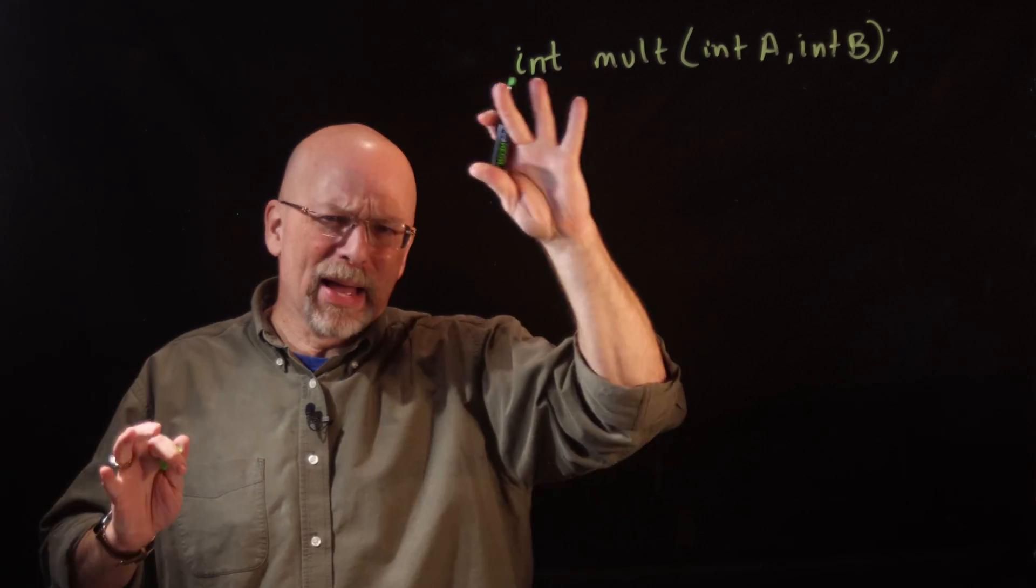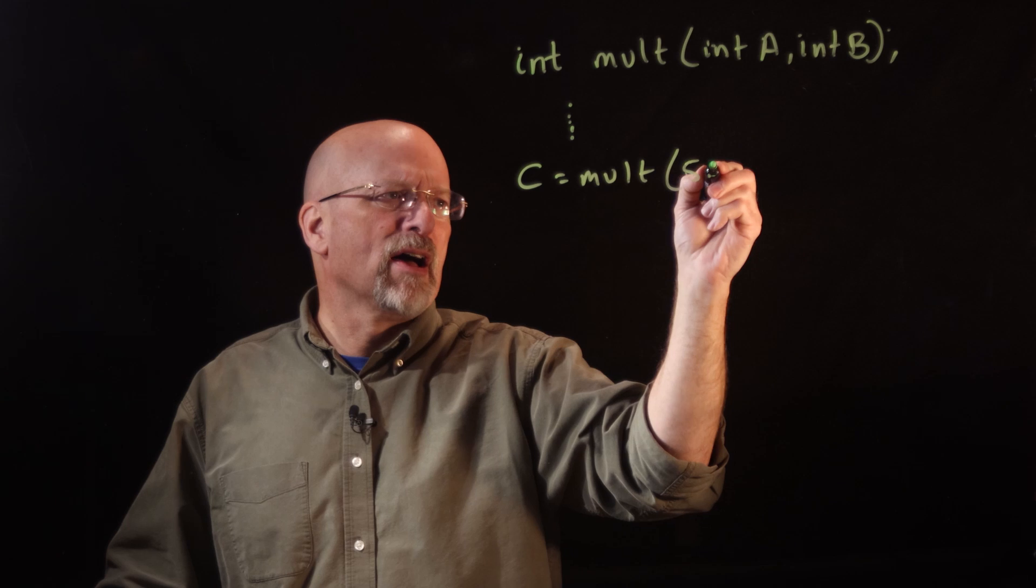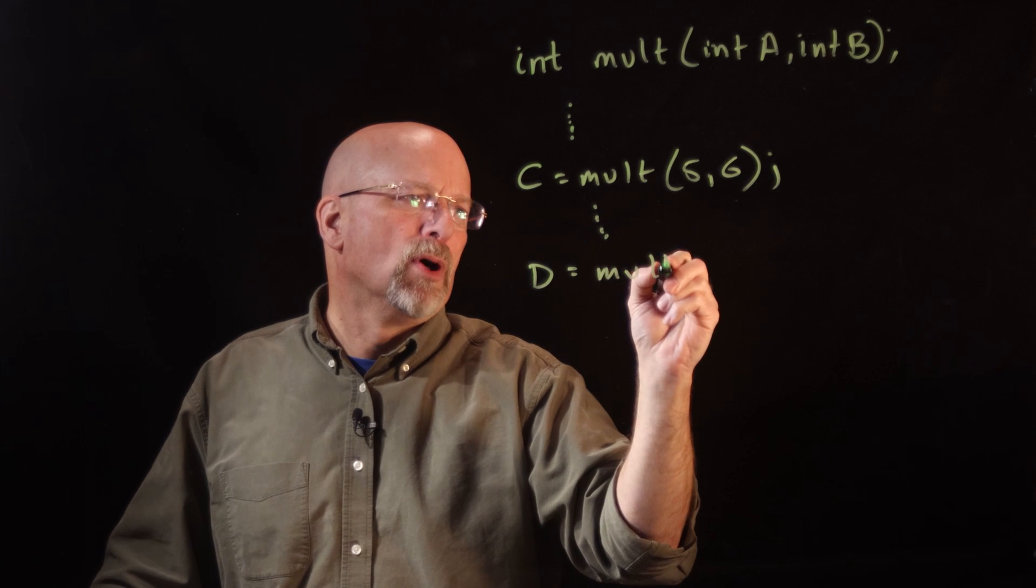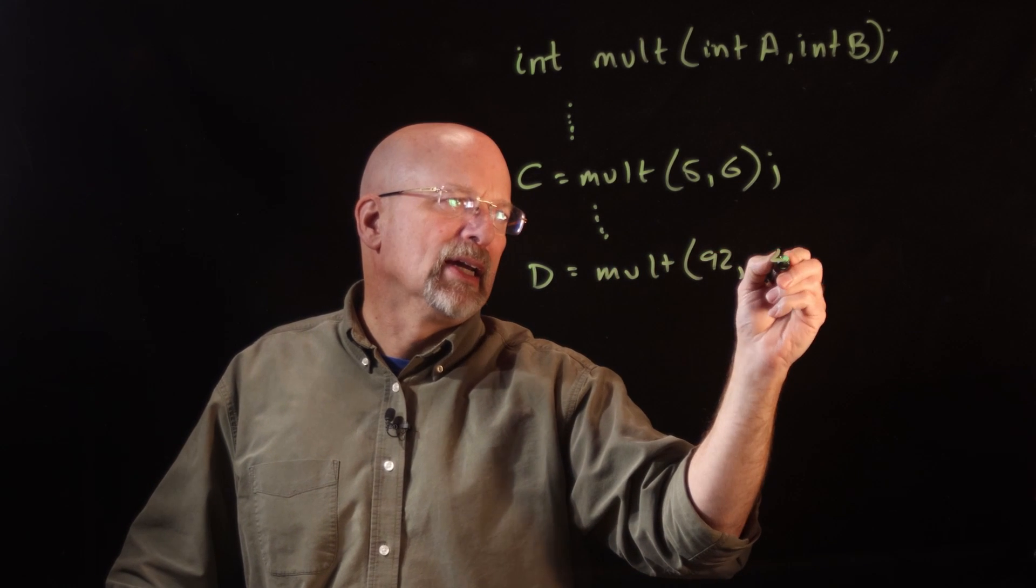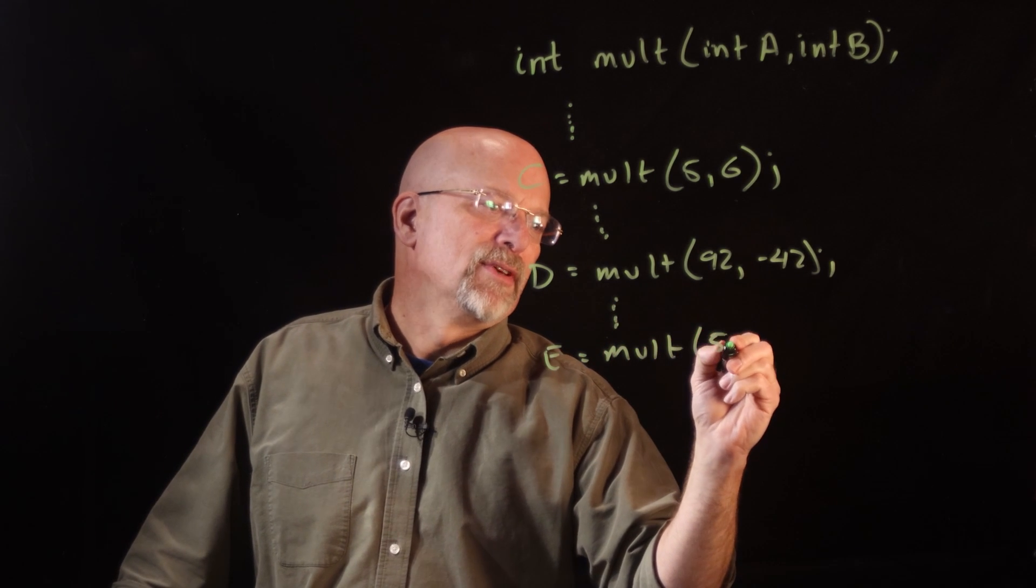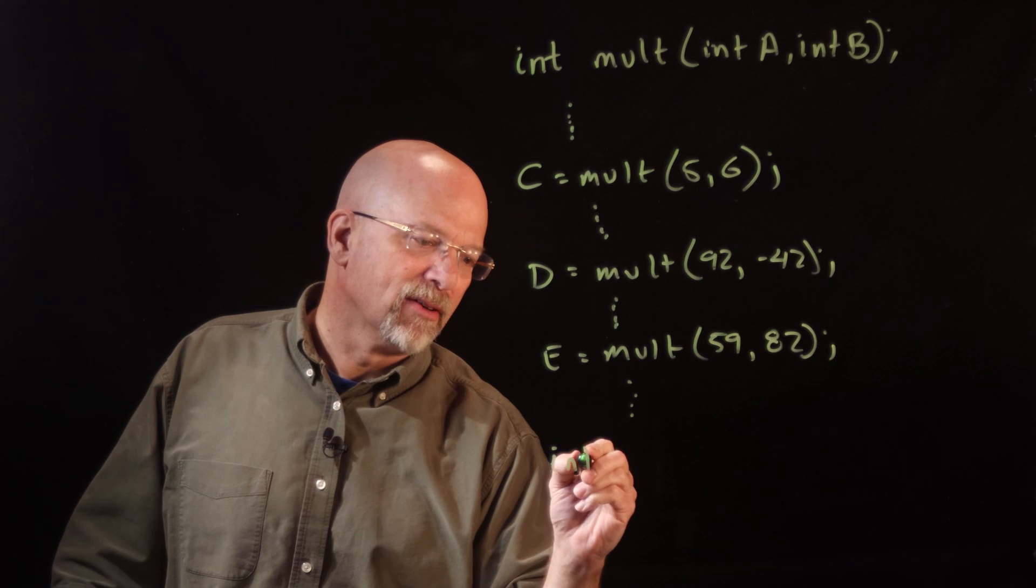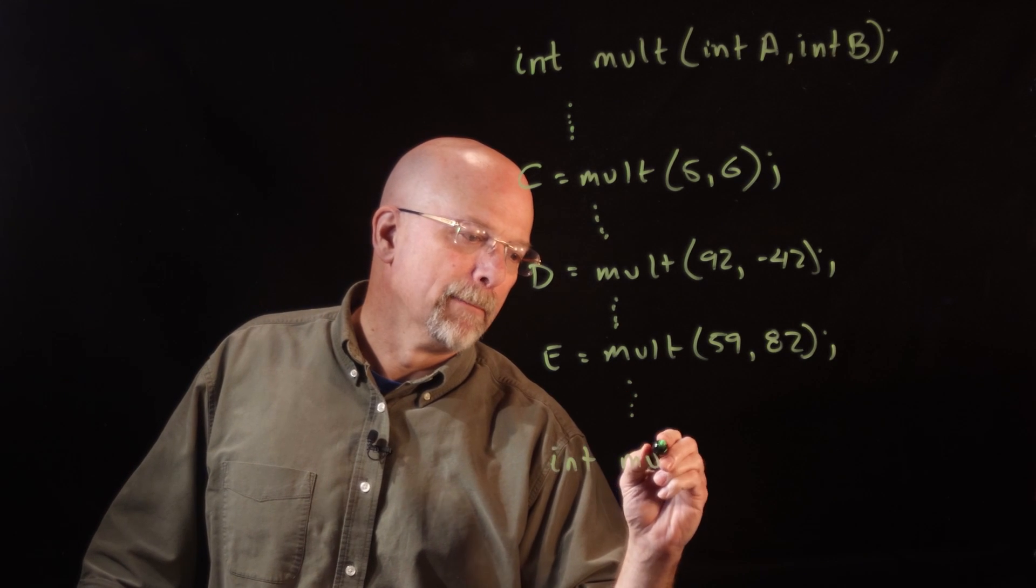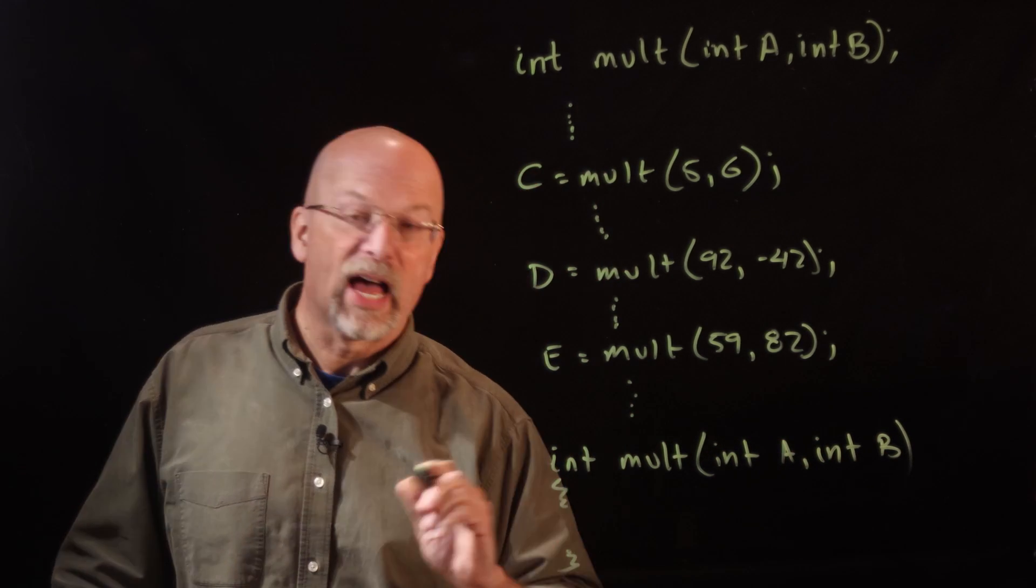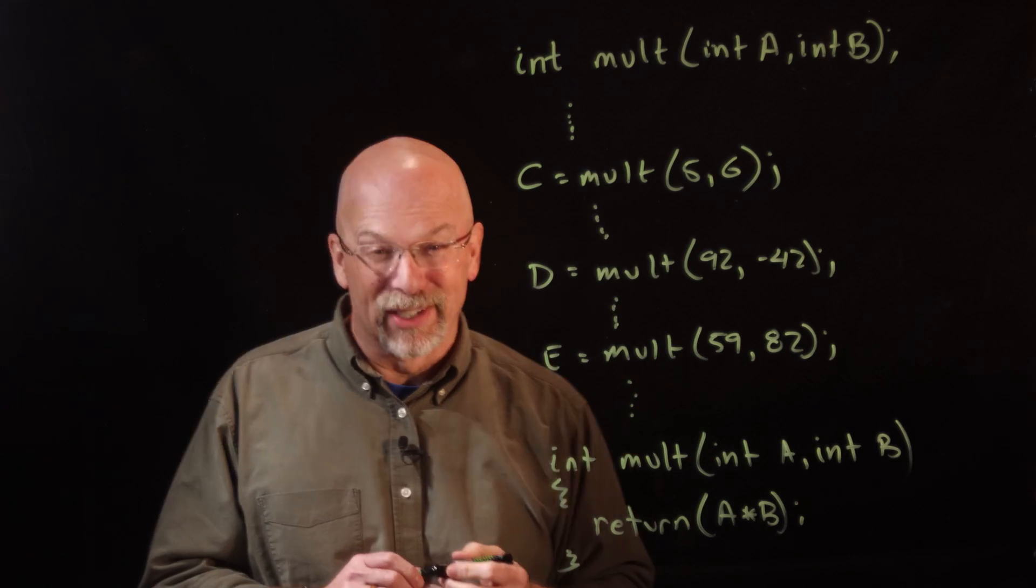Throughout my program, maybe I say C is equal to mult 5 and 6, and then a little later on I have D is equal to mult 42 negative 42, and then a little later I have E is equal to mult 59 and 82. Now somewhere down here I actually have this function, so I've got mult int A int B, and then inside I'm just going to simply do a return of A times B. Not much of a function but you get the idea.